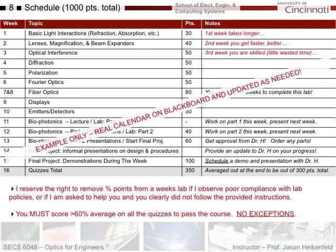Most of the time when I've had to come into the lab to help someone who's stuck, I show them something in the procedure they did not read and implement - that was the problem. I'm more than happy to come help you on tough projects, but I want to make sure you followed the procedures first. One other important grading note: you must score greater than 60% average on all quizzes to pass the course, no exceptions. This ensures you're actually learning the theoretical and practical lab concepts individually, not just riding on your lab group members.